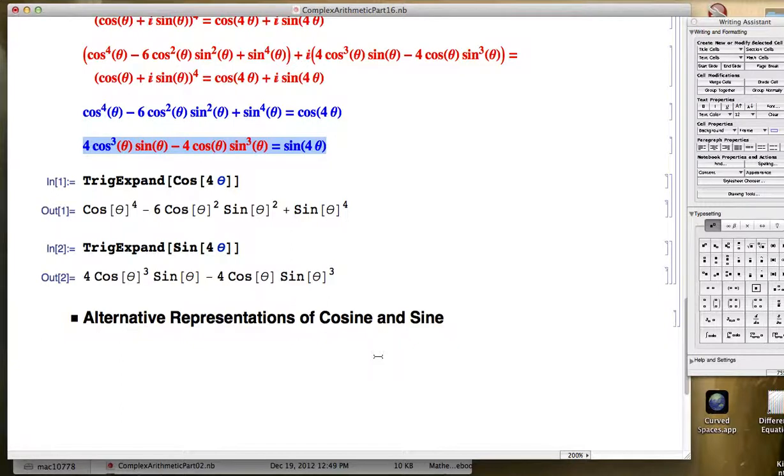In the couple of minutes that I have remaining here, I want to also show you, coming back to Euler's formula, a couple other things you can do with it. You can derive alternative representations of sine and cosine. How so? Well, let's think about Euler's formula